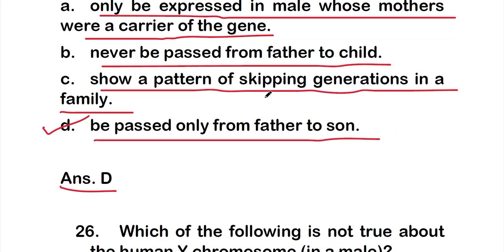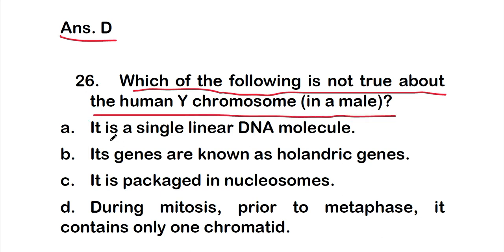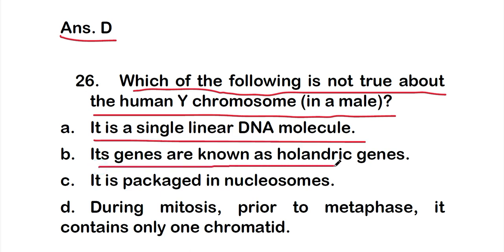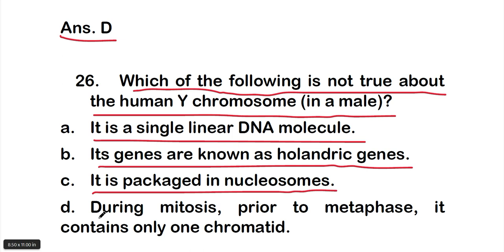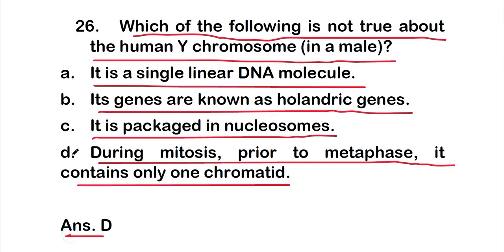Question 26: Which of the following is NOT true about the human Y chromosome in a male? Option A: it is a single linear DNA molecule, option B: its genes are known as holandric genes, option C: it is packaged in nucleosomes, or option D: during mitosis prior to metaphase it contains only one chromatid. The right answer is option D — this statement is false.